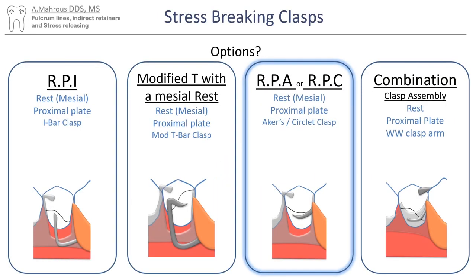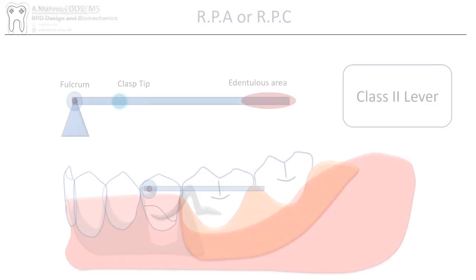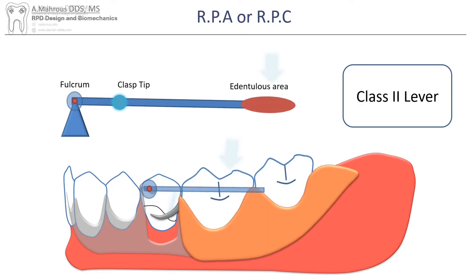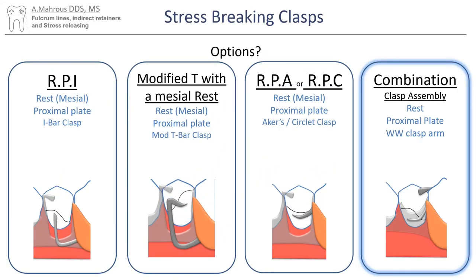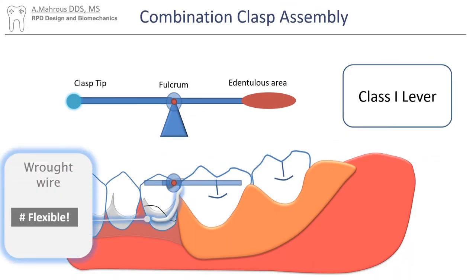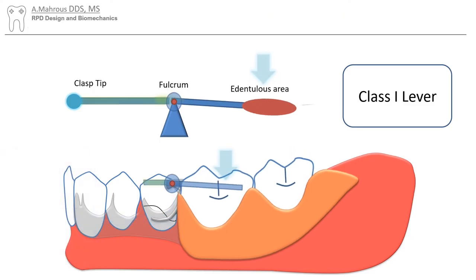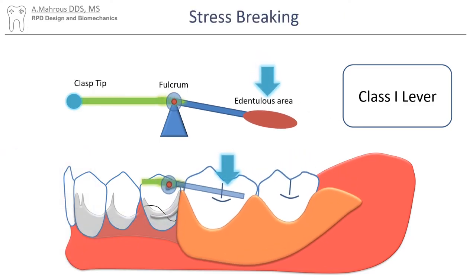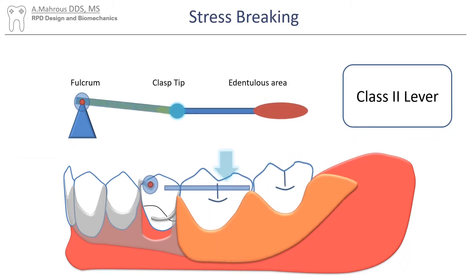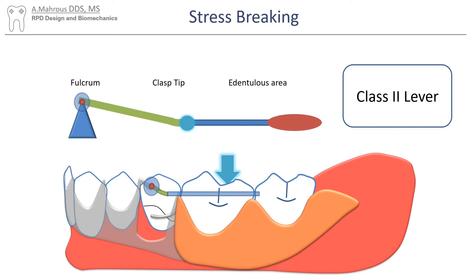The RPA or RPC clasp also works in a very similar fashion. The RPA is still considered a Class 2 lever as the clasp tip exists distal to the fulcrum line. The last stress-releasing clasp is the combination or wrought wire clasp assembly. This clasp breaks stresses a little bit differently. The main mechanism of action of the wrought wire clasp is its flexibility. Despite it still being a Class 1 lever, the clasp breaks stresses by flexing and therefore breaking the transfer of forces to the abutment teeth. An important note is that this will still work if the rest is placed mesially and the configuration is changed into a Class 2 lever.